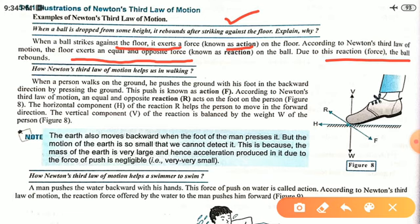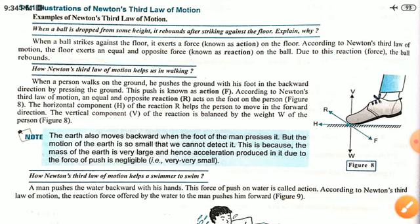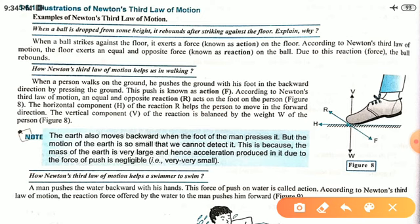Next question: why is a person able to move? Why is the walking of a person possible? When a person walks, we press the ground with our feet slightly slanted in the backward direction. The ground exerts an equal and opposite force on us. The vertical component of the reaction force balances our weight, and the horizontal component enables us to move forward.